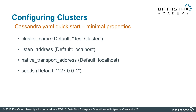Next is your listen address. This is the IP address used by other nodes in the cluster so that this node can be found. Moving on to native transport address, which is the IP address used by the client to connect to the node and/or to the cluster.